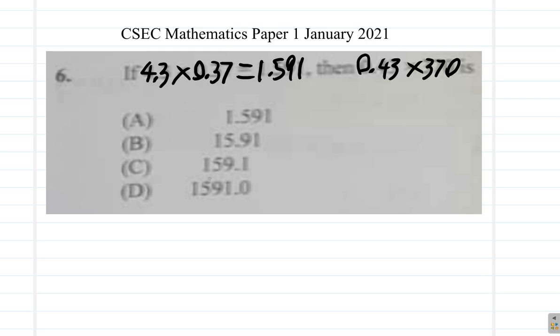Now here, 4.3 multiplied by 0.37 is equal to 1.591. You don't have a calculator to use, so let's see how you reason it out.